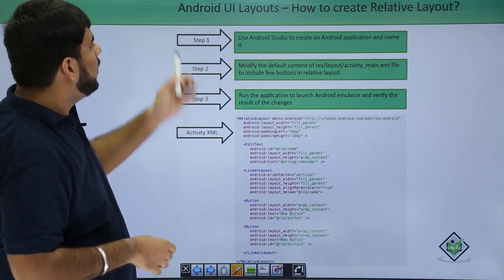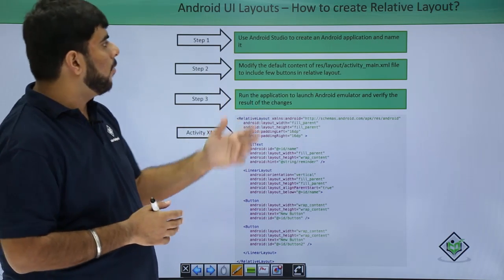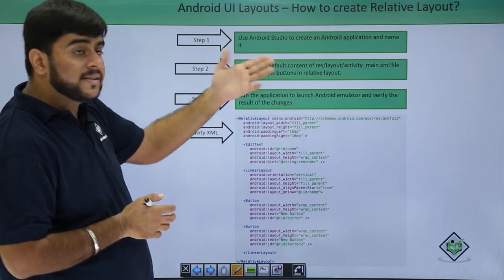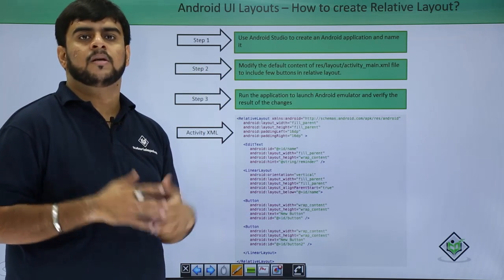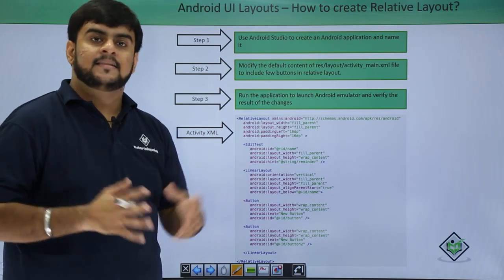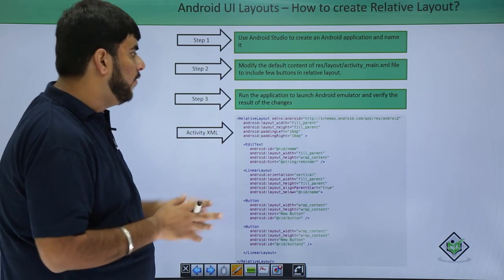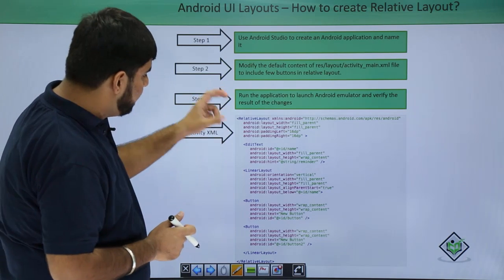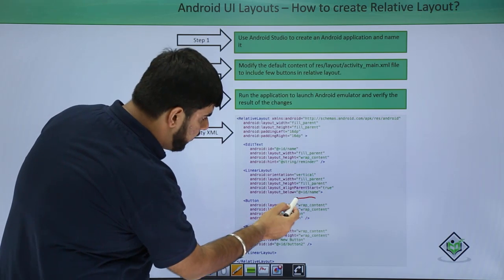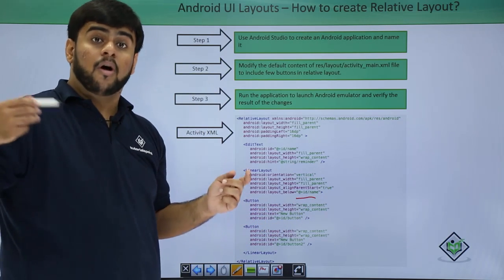Now let's open Android Studio, create a new project, name the project as Relative Layout Demo. The activity_main.xml will have some buttons in a relative layout, and all these buttons or views will be in relation with a particular view or view group.